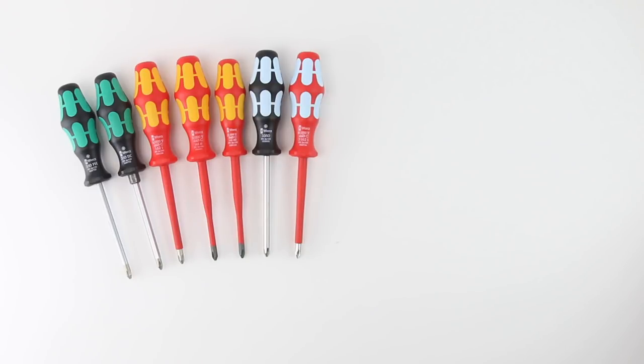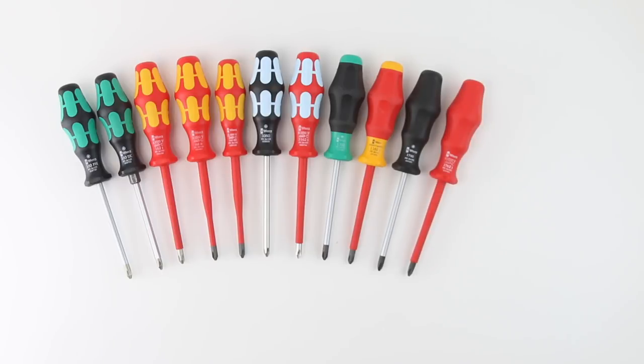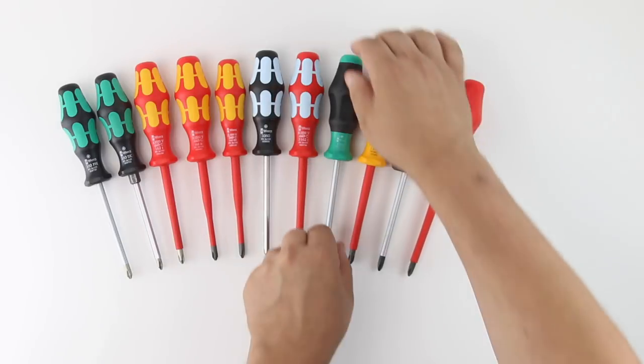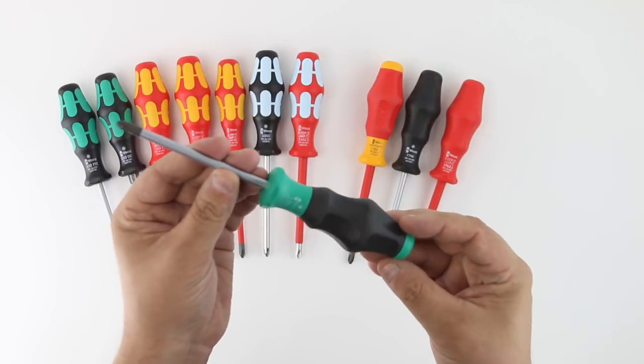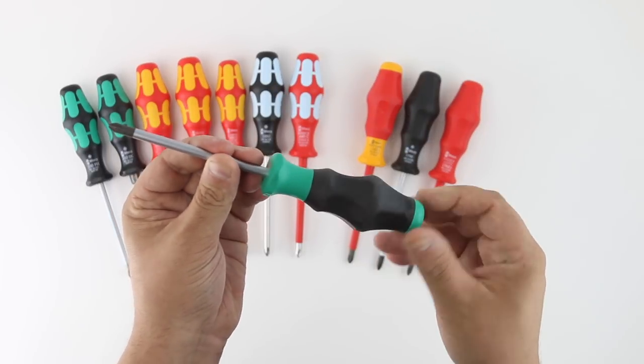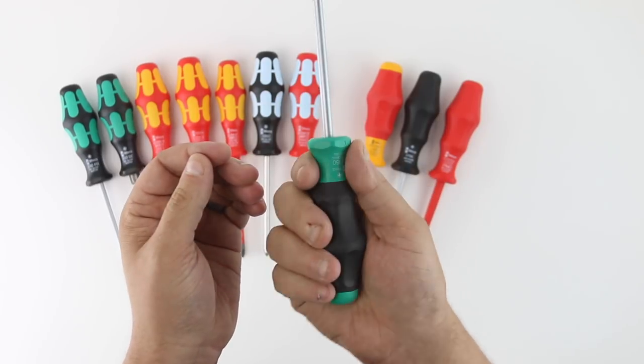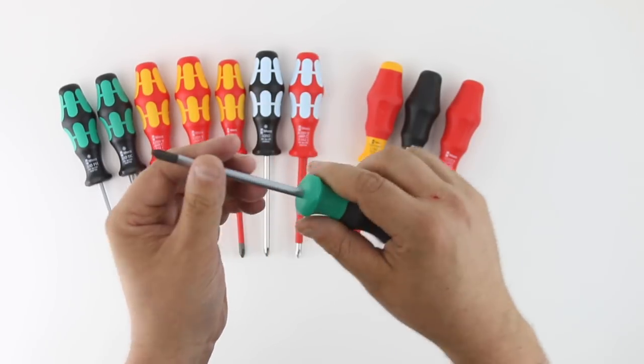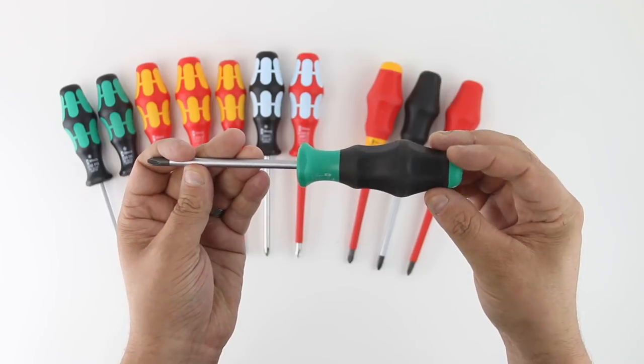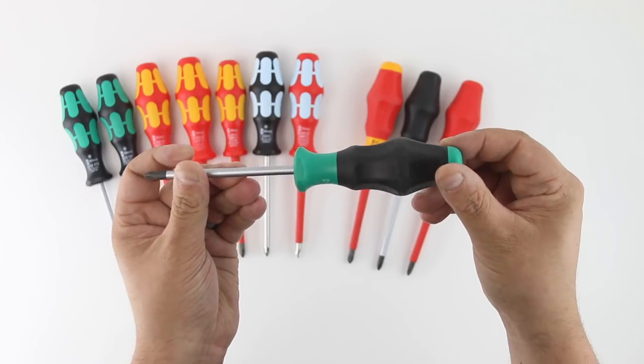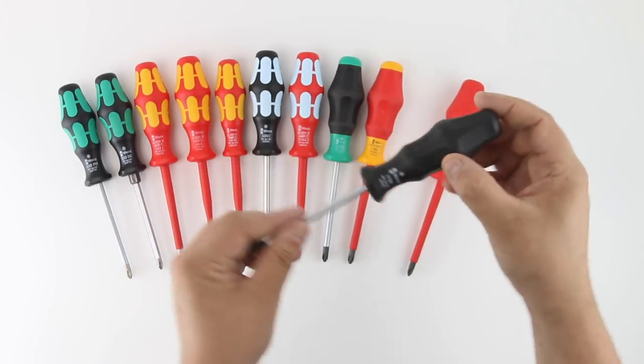A budget-friendly option is either the Craftform Comfort or the Craftform Classic line. These all have the same grip design as their higher-end counterparts, without the premium features, such as bolsters or laser tips. They come in standard or insulated. The Comfort line has a multi-component handle, while the Classic is all one hard material.